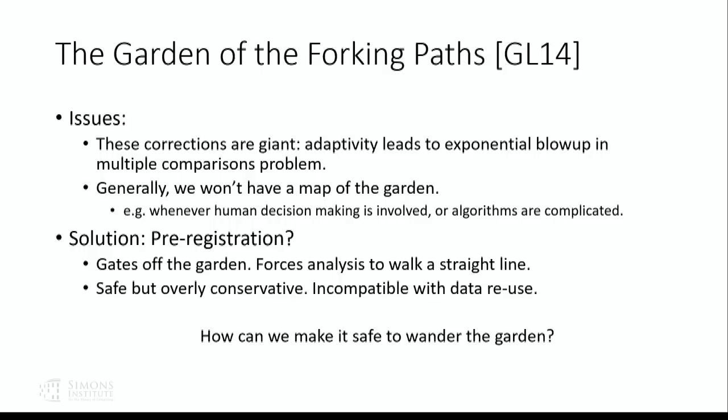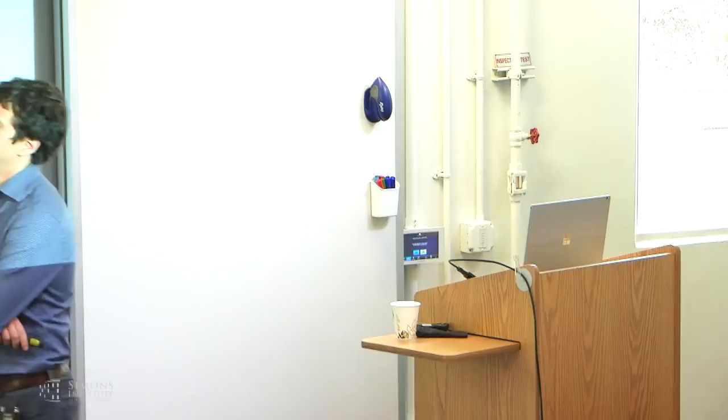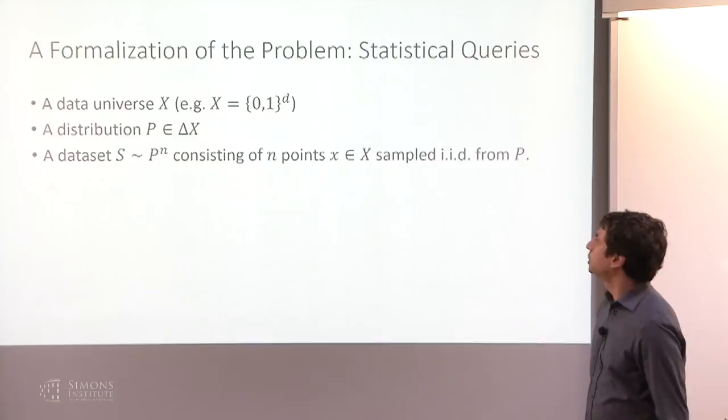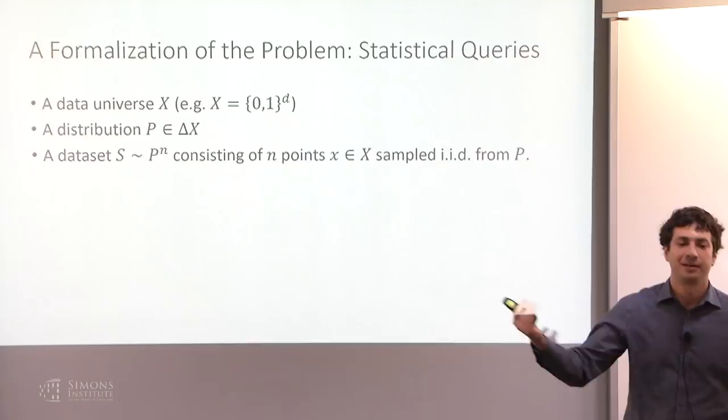So we want to think about what we can do to make it safe to walk in the garden of forking paths. Let me write down a formalization of this problem so we can think about it rigorously. This is a particular formalization, but not the only one — don't think of all these as essential assumptions, just as a particular framework to see what's possible.